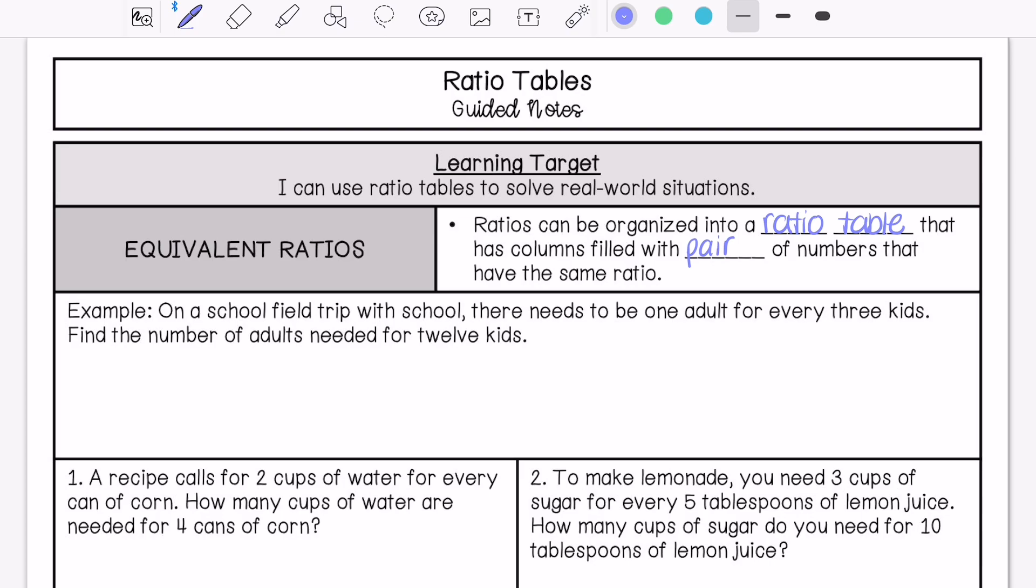I'm going to show you an example of how we would figure out the answer to a problem using a ratio table. On a school field trip, there needs to be one adult for every three kids. Find the number of adults needed for 12 kids.